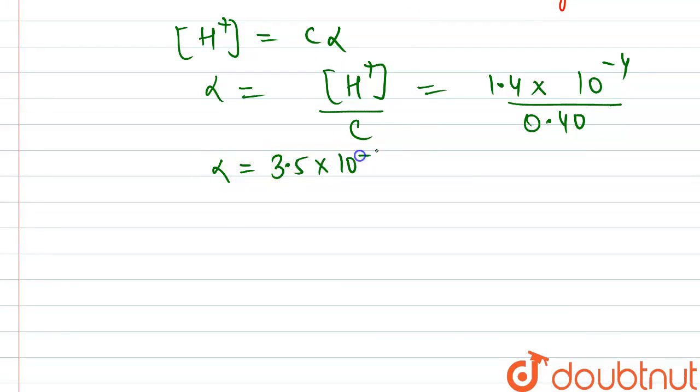Now we will be using this value in the expression of Ka, that is Cα². Concentration is 0.40, alpha we just calculated is 3.5 × 10^-4. This is the expression of Ka.